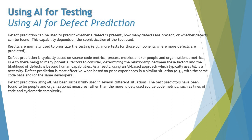AI doesn't work without training — we have to give it some kind of training that helps identify the typical areas where defects occur. The results are normally used to prioritize testing; for example, more tests are allocated to those components where more defects are predicted. Defect prediction is typically based on source code metrics, process metrics, and/or people and organizational metrics.